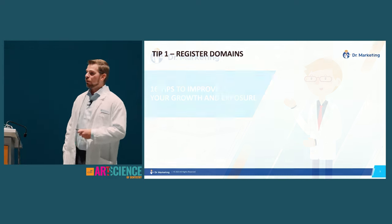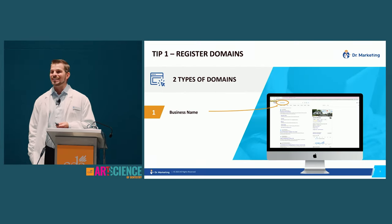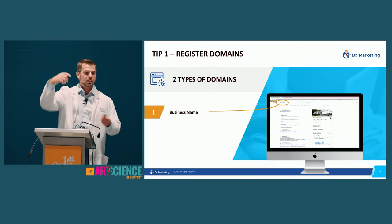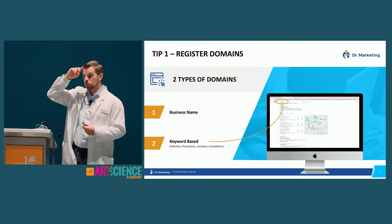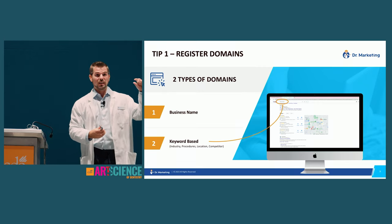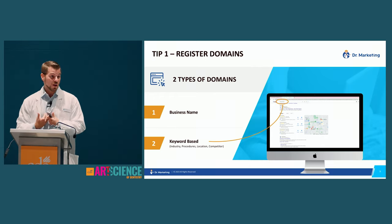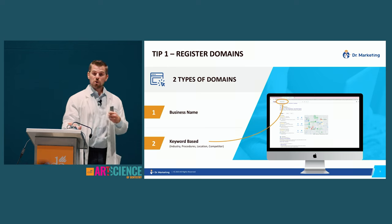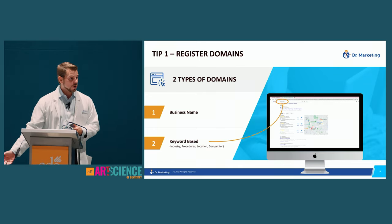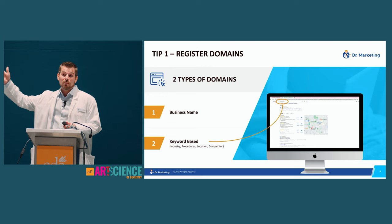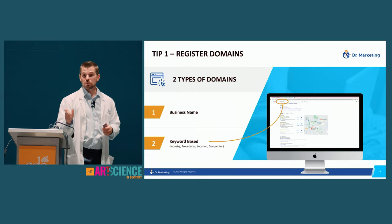The top 16 things you should be doing for your practice — the very first is domains. There are two types: business name domains like brandondentistry.com, and keyword-based domains like 'family dentist in San Jose' or 'dental implants in San Jose.' A keyword-based domain is typically tied to a service, location, or industry. Be aware that many competitors use keyword-based domains — if they own 'San Jose Family Dentist,' do not register 'San Jose Family Dentistry.'